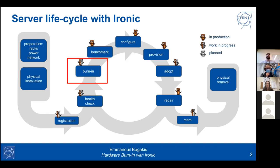There is also an additional entry point, since there could be cases of existing servers in the data center that we want to adopt in Ironic. Of course, servers may break, so we need a repair mechanism. Eventually servers reach their end of life, are retired, and the last step is to physically remove them from the data center.